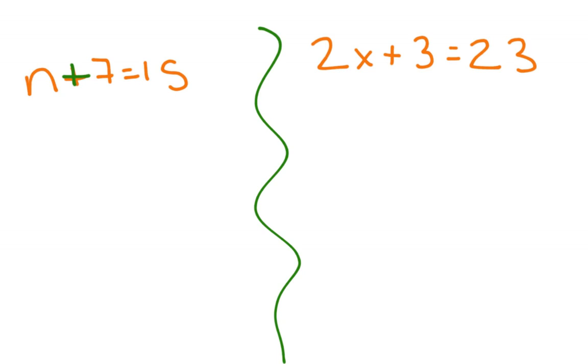It's also the opposite, the inverse. So we want to undo this plus 7 that's with the n using a minus 7. So that would leave behind plus 7 minus 7 would be 0, so it would leave only n. Our goal is to get n alone.